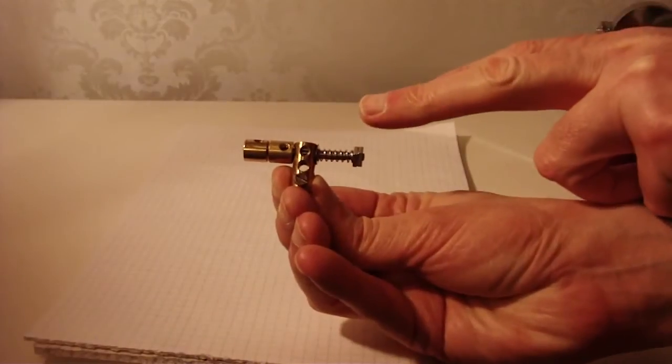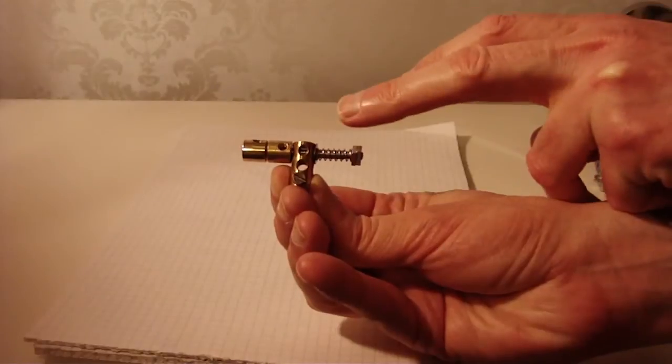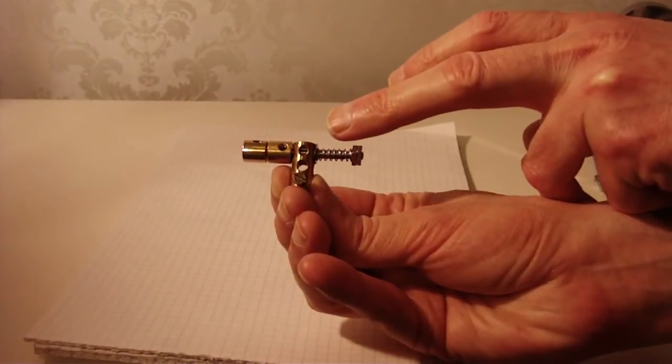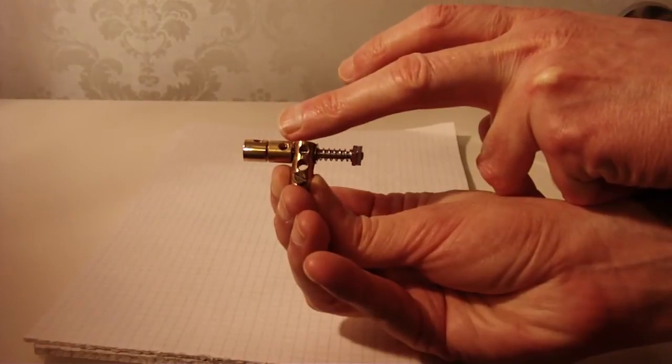What we have is a long threaded pin which passes through this coupling in the middle. There's a compression spring this side and on this side there's a rod socket.